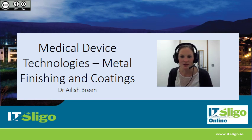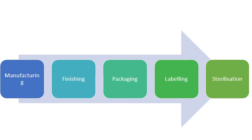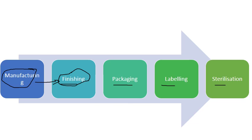Welcome back. In the next few slides I'm going to talk about metal finishings and coatings applied to metallic medical devices. Looking at the manufacturing process of a medical device, after the actual manufacturing the device is typically finished — it may be polished or a coating is placed on the device — and this happens before packaging, labeling, and sterilization.